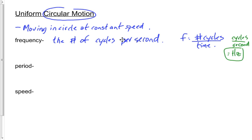The period is essentially the inverse of frequency. If frequency is the number of cycles per second, the period would be the time per cycle — not cycles per time, but time per cycle, usually in seconds. Period is given by capital T. Be careful: lowercase t is time in general — it could be the time for one cycle, the time for a car to drive to Calgary, or any other time. Capital T represents a very specific time: the time for one cycle or one revolution.